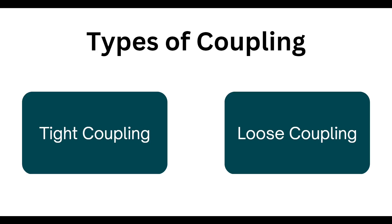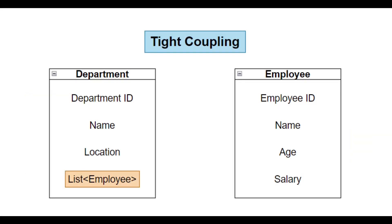Let's talk about tight coupling first. In this example we have a Department class and an Employee class. Department has department ID, department name, and department location, and also a list of Employee objects. Employee has employee ID, name, age, and salary. This code is tightly coupled because Department is dependent on Employee — if we make a change in the Employee class, we have to compensate with that change in Department as well.